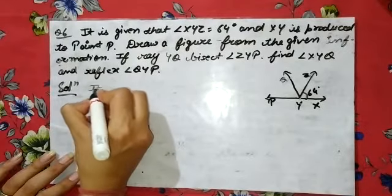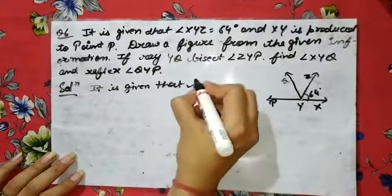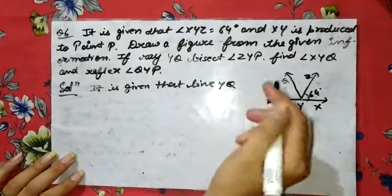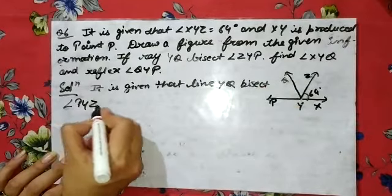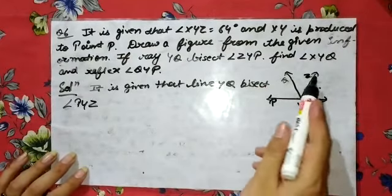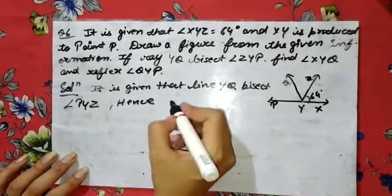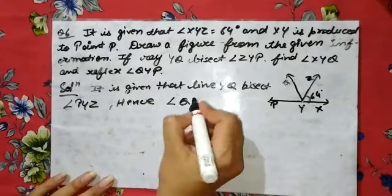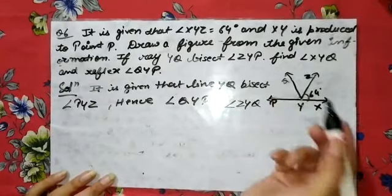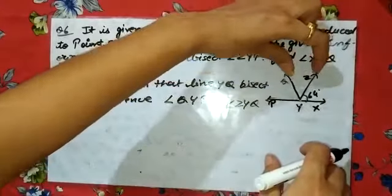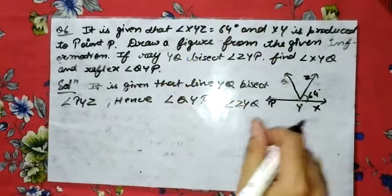It is given that line YQ bisects angle PYZ — we can also say it bisects angle ZYP. Hence these two angles will be equal. Since YQ bisects it into equal parts, angle QYP equals angle ZYQ, because this is your bisection.